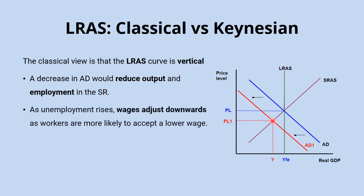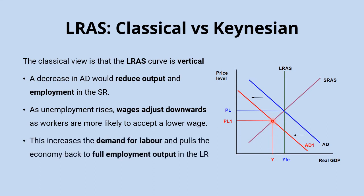Over time, higher rates of unemployment put downward pressure on wages as workers' negotiating position gets weakened by an abundance of available labour. A basic analysis of labour markets tells us that lower wages increase the quantity of labour demanded, which increases employment and brings the economy back to full employment — back onto the vertical long run aggregate supply curve.